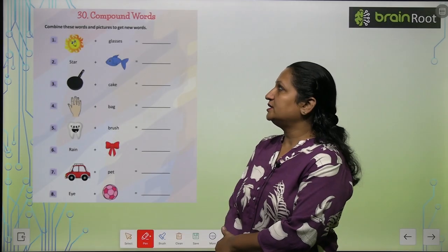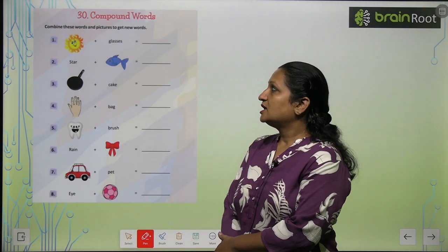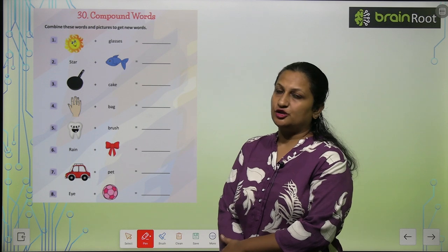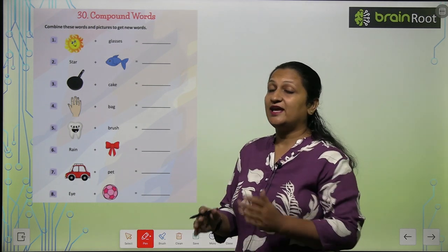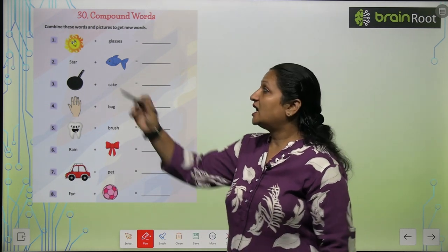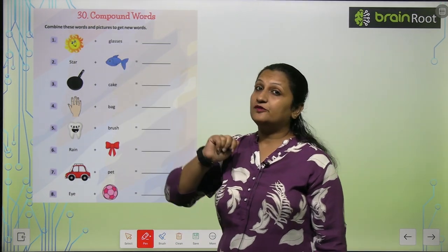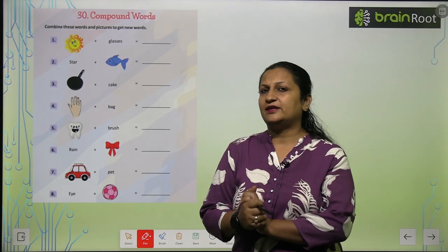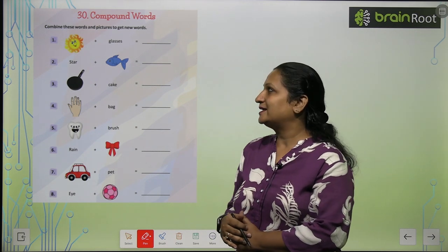Chapter number 30, children — this is compound words. Combine these words and pictures to get a new word. So yeh hai ek fun activity. Yehaan aapko ek picture di hai, saath me aapko ek word diya hai. Donoh ko mix karke aapko ek single word banana hai.